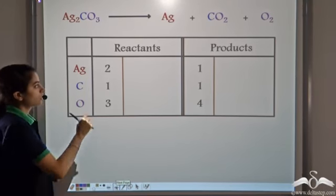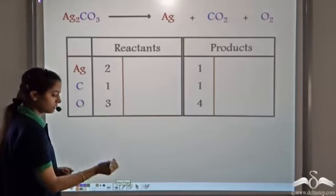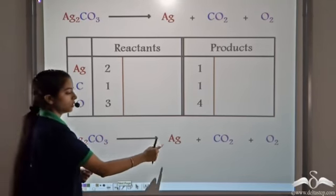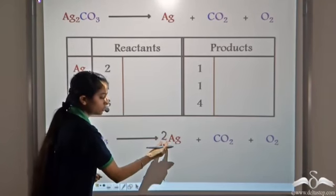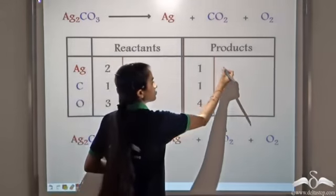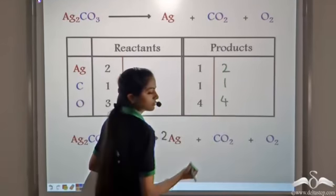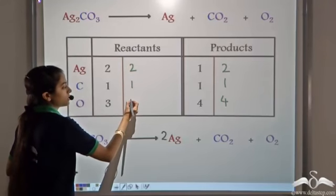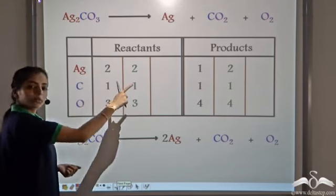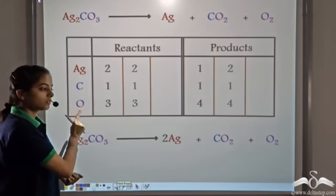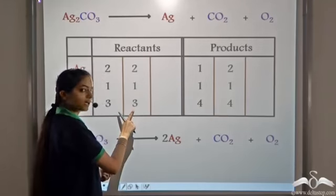On the reactant side we have 2 atoms of Silver; on the product side we have 1 atom. To balance Silver, we take 2 molecules of Ag. When we multiply Silver by 2, we get 2 atoms of Silver on the product side. Carbon remains 1 and Oxygen remains 4. The reactant side is unchanged: 2 Silver, 1 Carbon, 3 Oxygen. Now Silver is balanced and Carbon is balanced, but Oxygen is not — reactant side has 3 atoms and product side has 4. Again there is a difference of 1 atom for the species present alone.